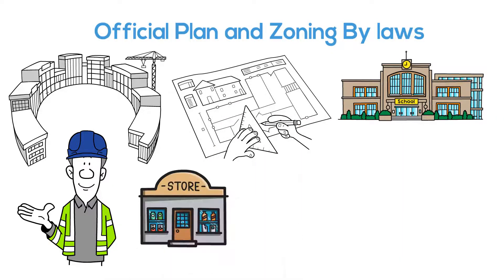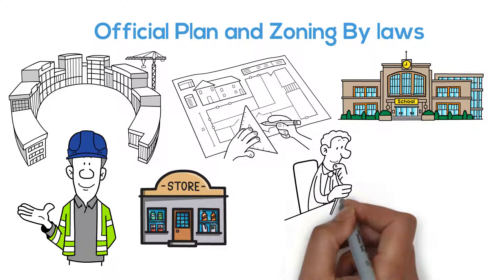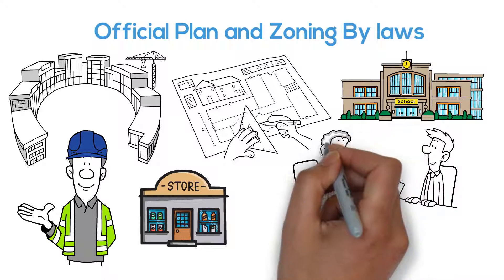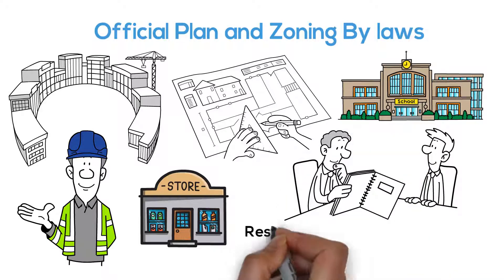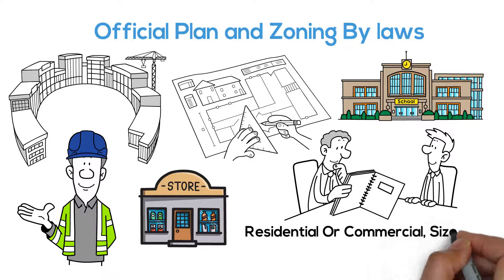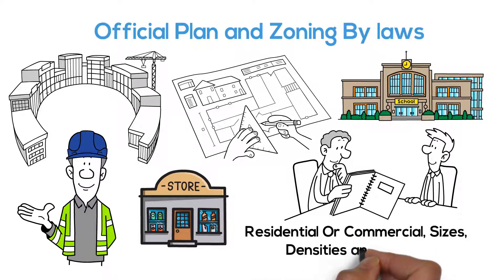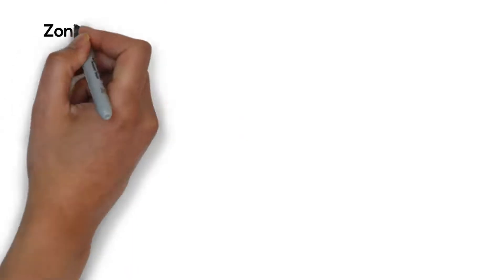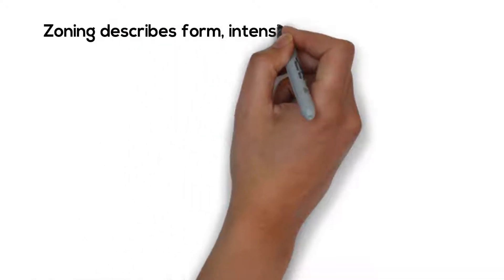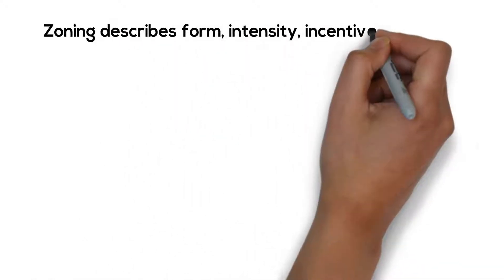The Zoning By-law regulates a site for permitted use, such as residential or commercial, as well as sizes, densities, and heights of each property. Zoning describes form, intensity, incentives, and uses.